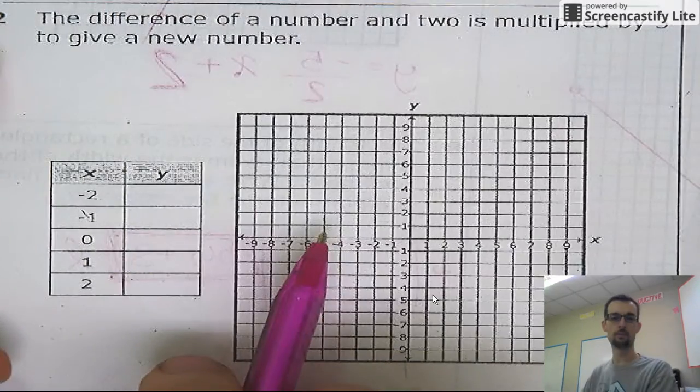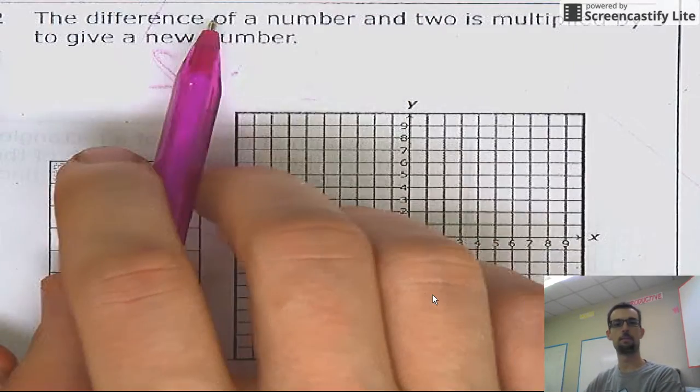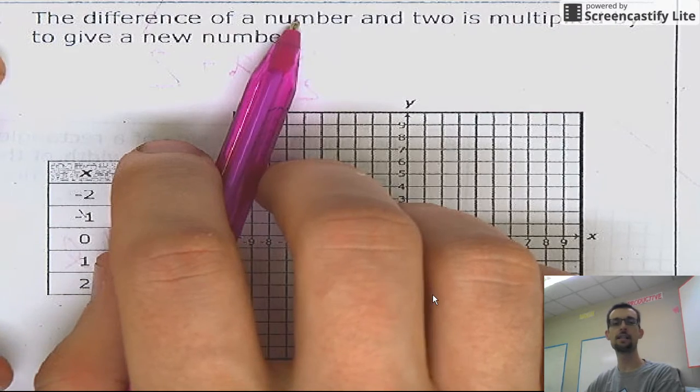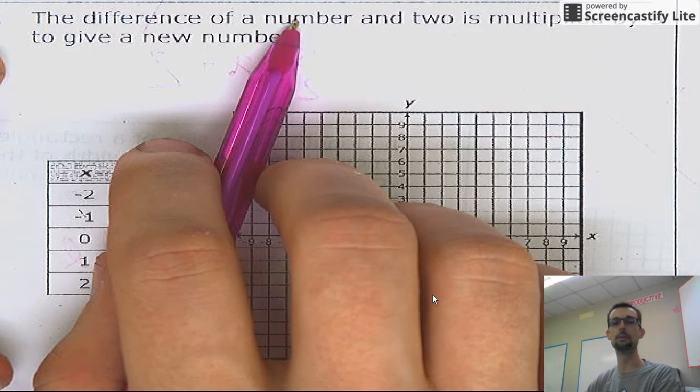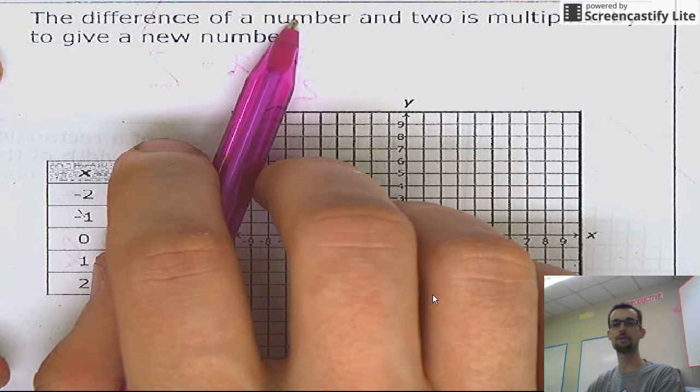This is kind of a magic trick, right? Think of any number. Think of a number. Now, find the difference between that number and two. What does difference mean?